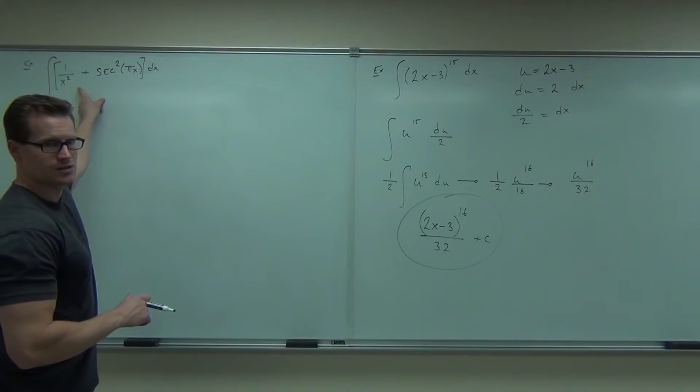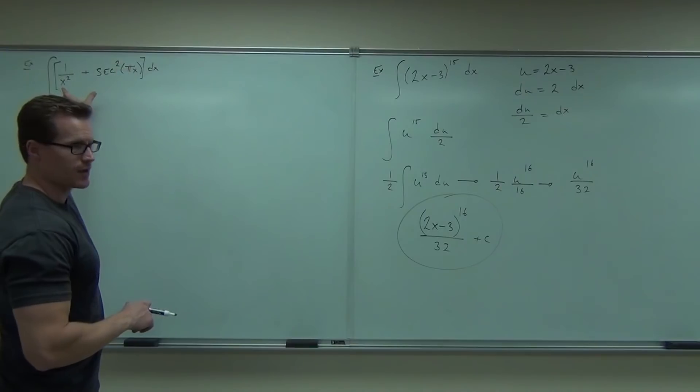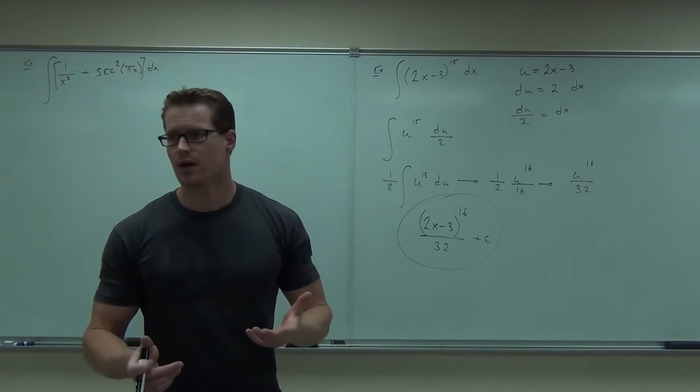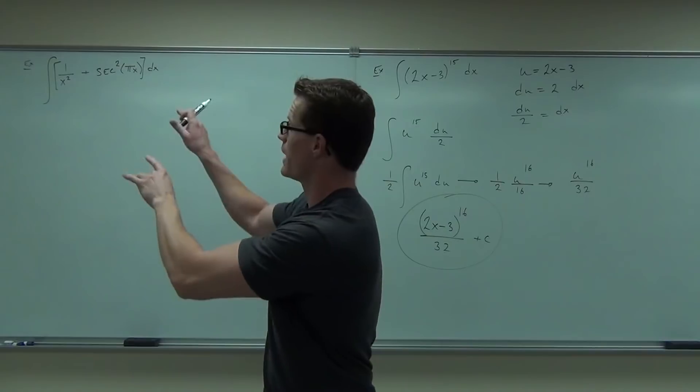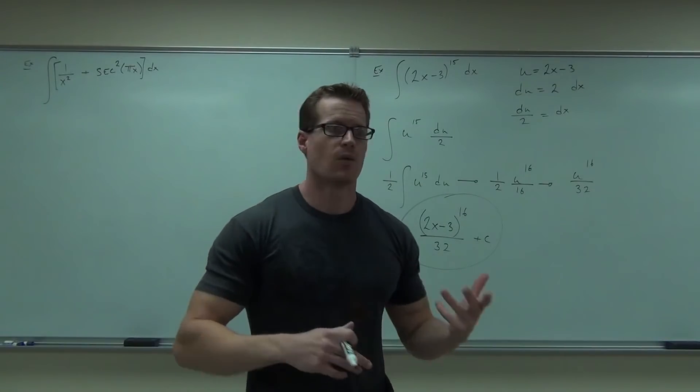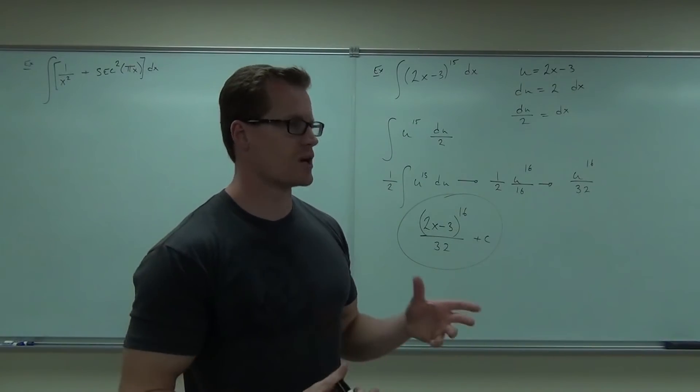Because if I pick that as my u, I'm still going to have an x in there, right? So I'd have a du something and I'd have an x. And that's not going to work out for you. You can't do a direct substitution on that integral the way it is right here.